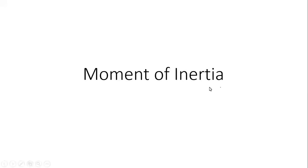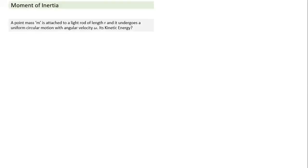Moment of inertia is the first topic of rotational motion. To understand why it is defined in a particular manner, suppose we have a point mass m attached to a light rod of length r. It undergoes uniform circular motion with angular velocity omega.